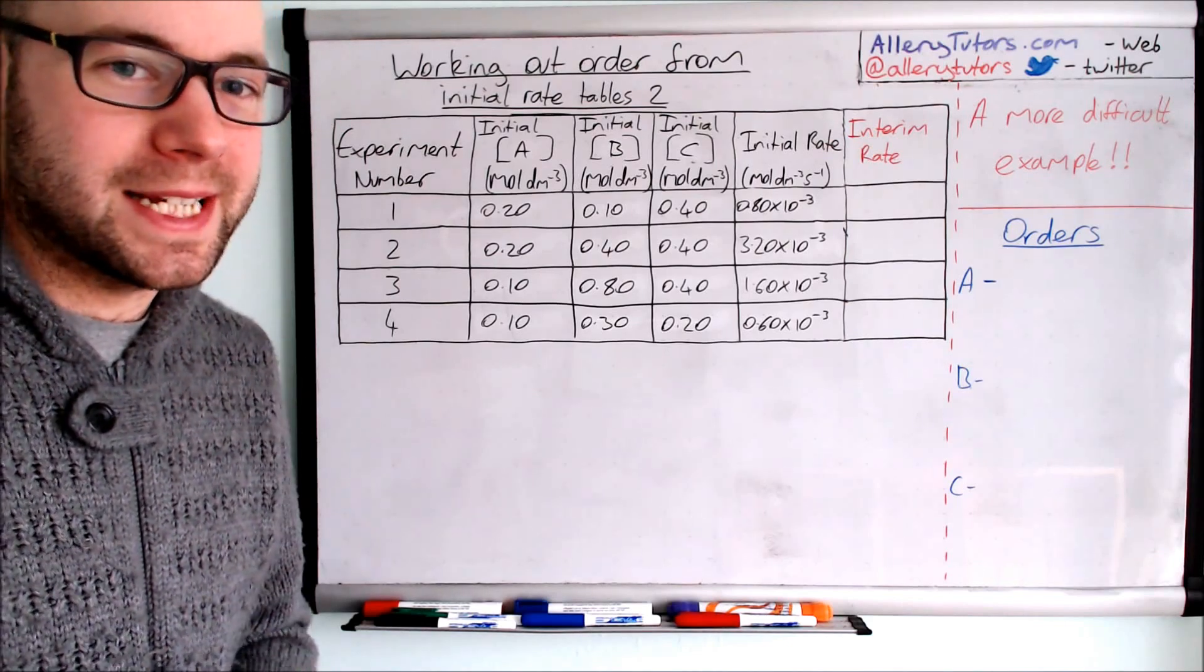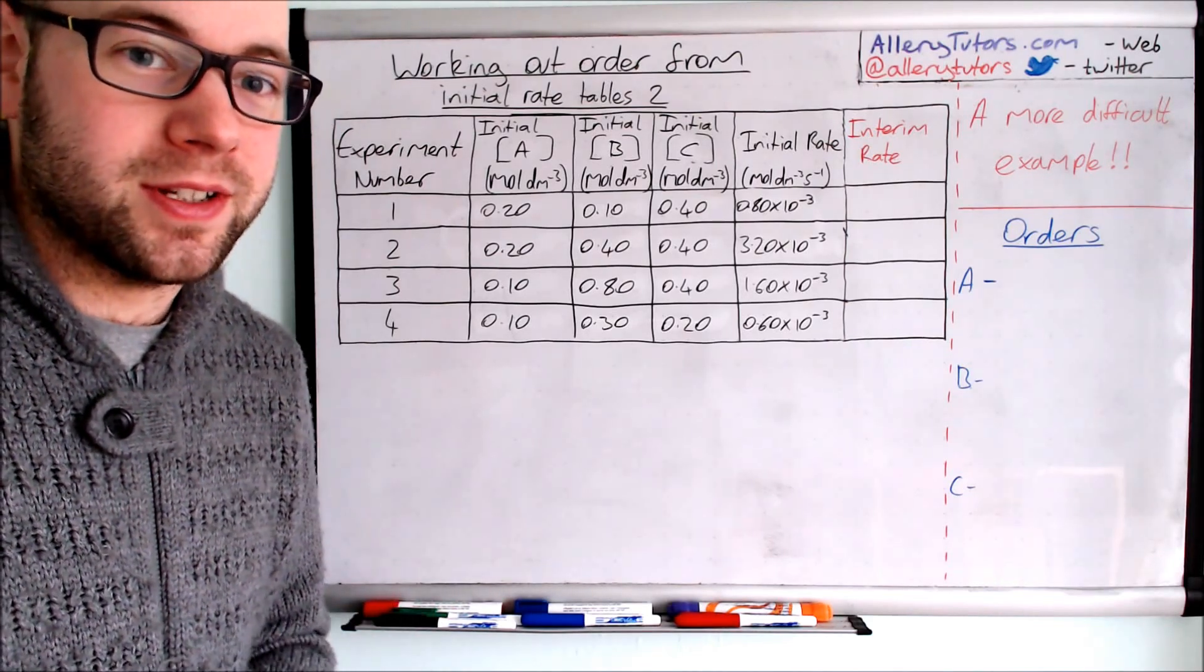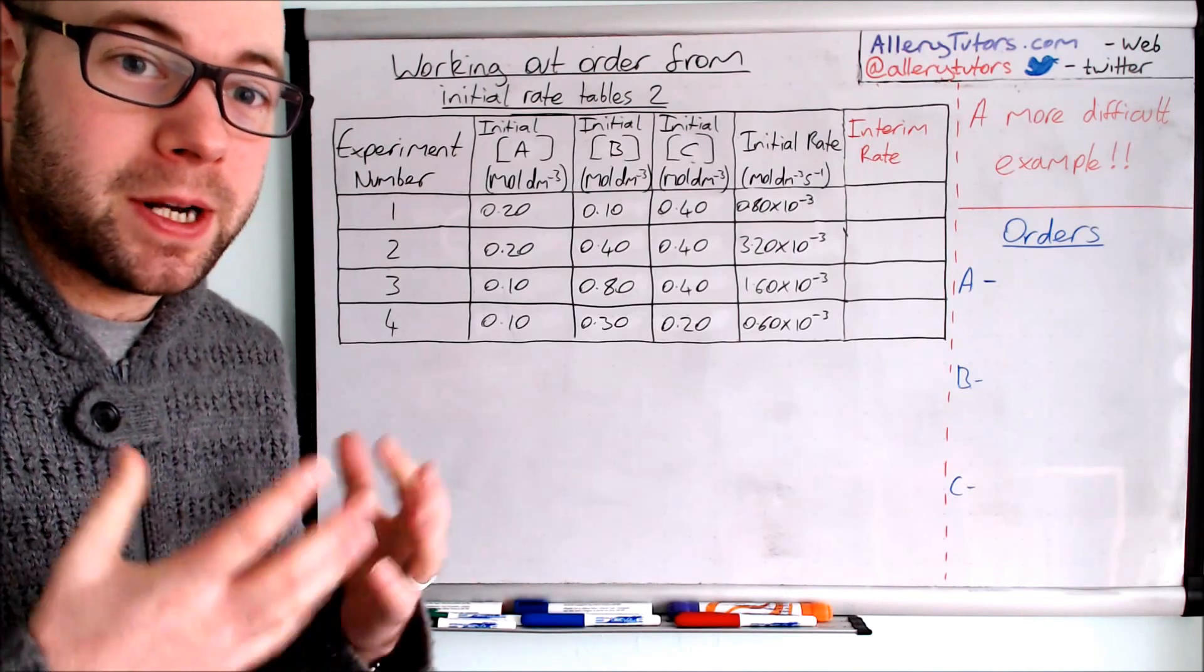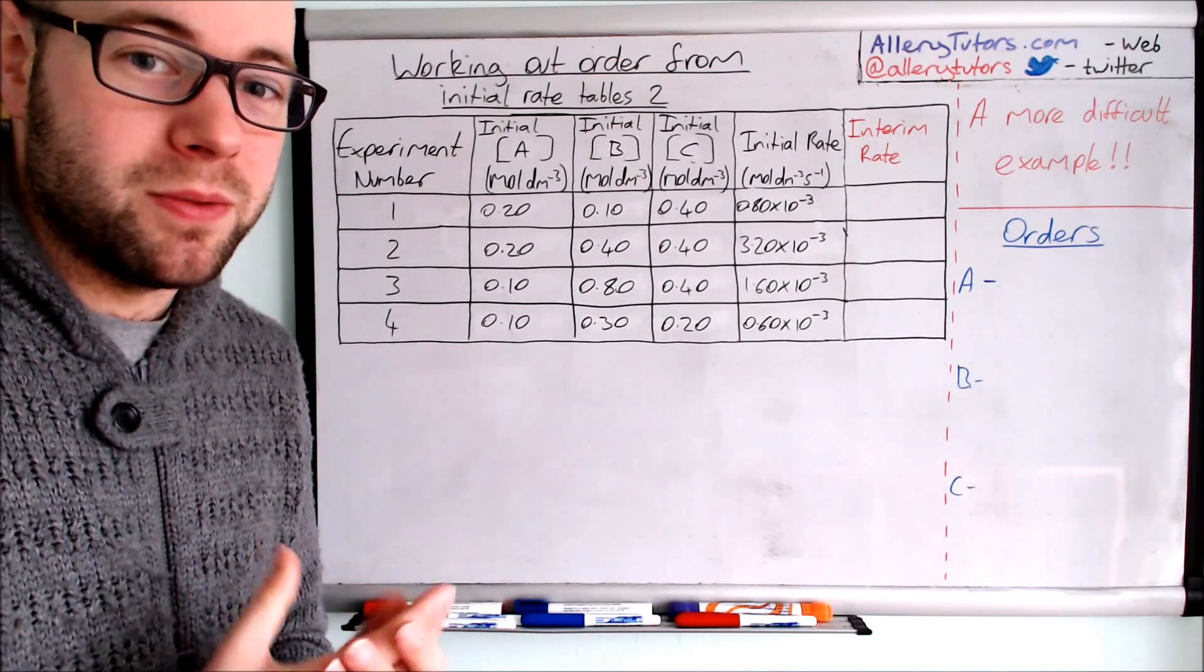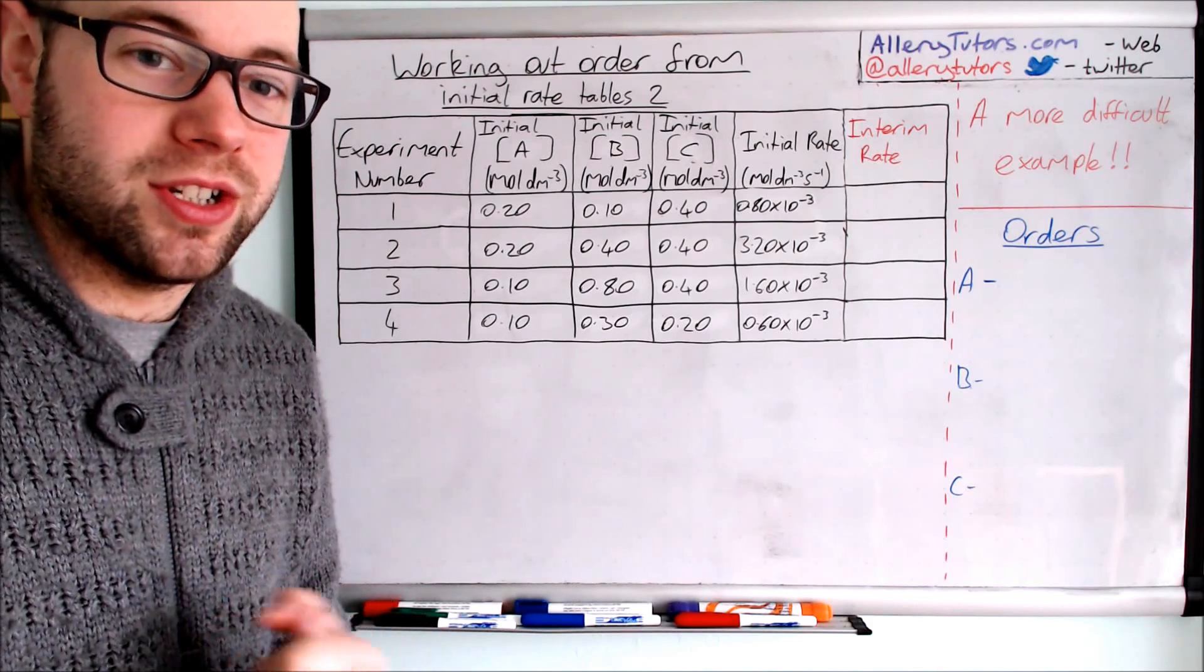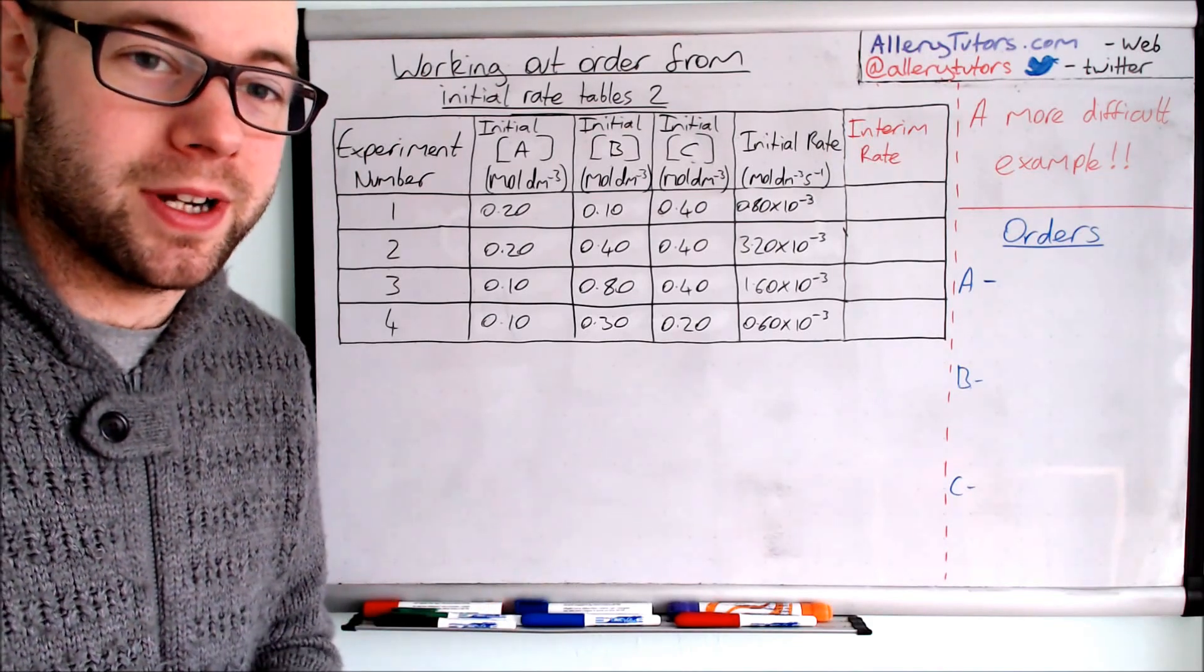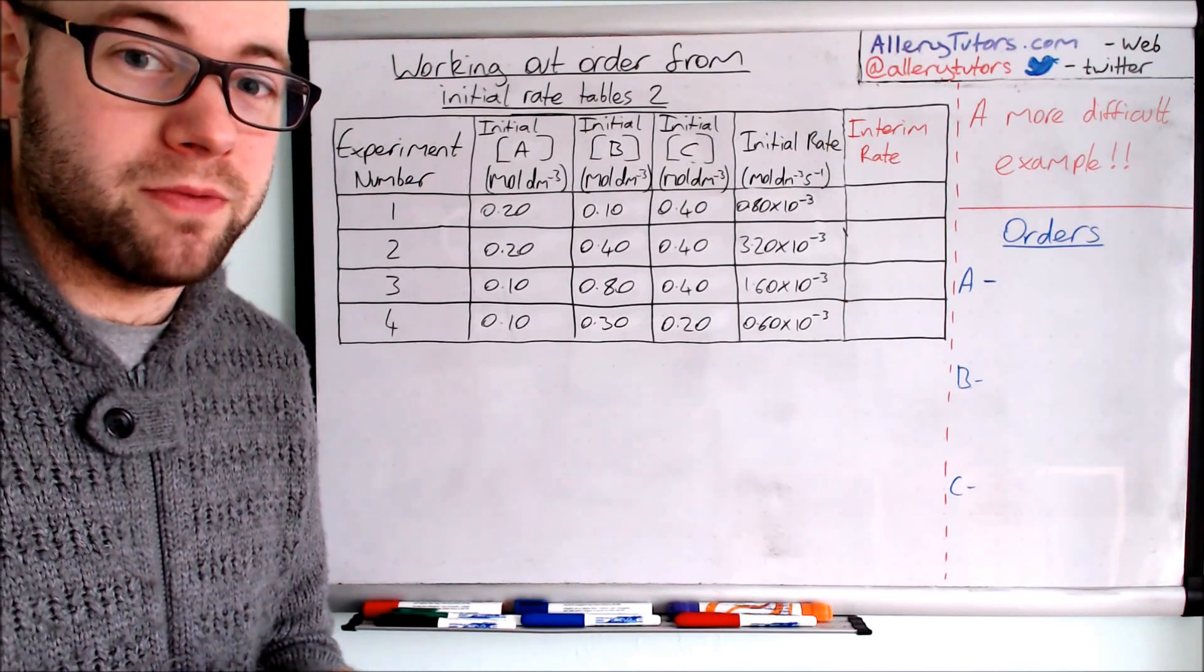This video will show you an example of the classic order type questions that you'd get in your exam, but it's a lot more difficult. The reason is because we have a reagent here where the concentration is changing through every experiment that we've got, which makes it really difficult to work out individual orders for other reagents.